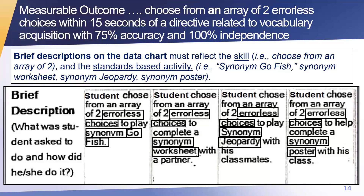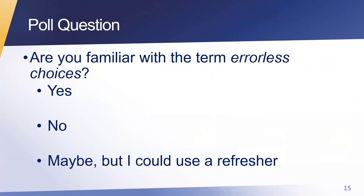Some people were confused about errorless choices — what they are, how you can take data on something that's errorless, and how it's scored. I want to know how familiar you are with the term errorless choices. Please answer this poll question — yes, no, or maybe I could use a refresher.